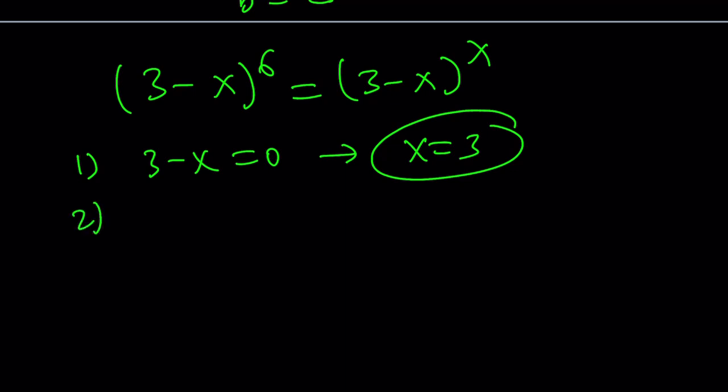Second case scenario. 3 minus x can be negative 1, but x must be even. Because 6 is even, x must be even. From here, we get x equals 4, which is even. So we're good, even. Okay. So far, so good.